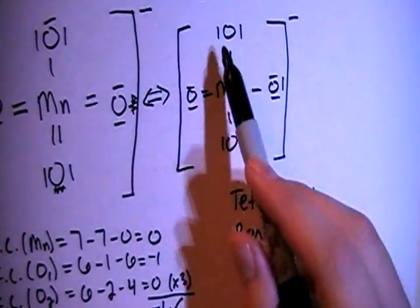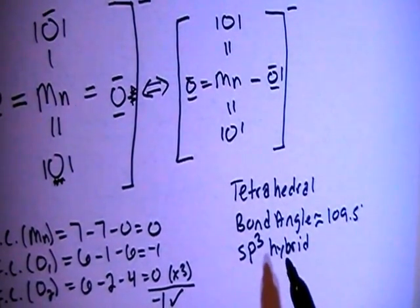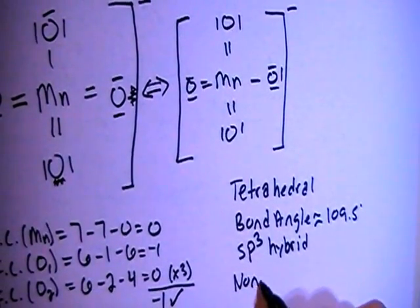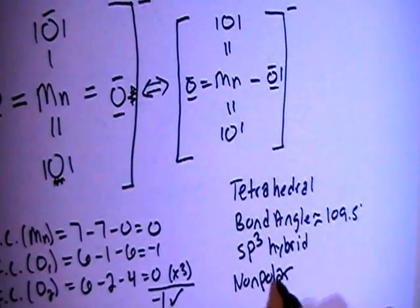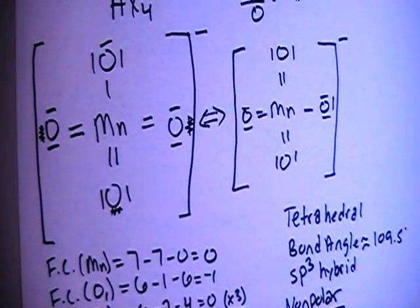And because these are all oxygens, because they're all the same kind of surrounding atom, that means that they're going to cancel each other out in terms of polarity, which means that this is going to be a non-polar ion. That is pretty much it for this one. If you have any questions, let me know, and thanks for watching.